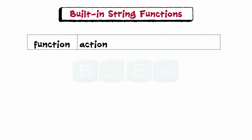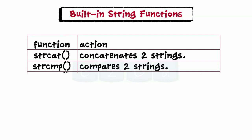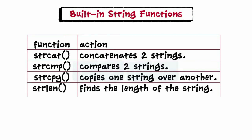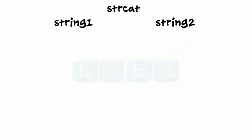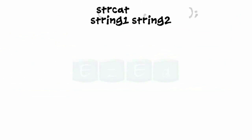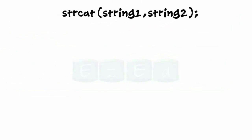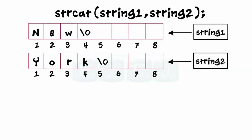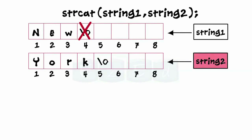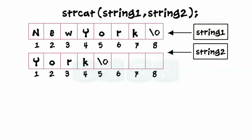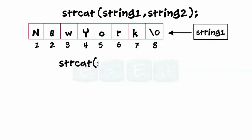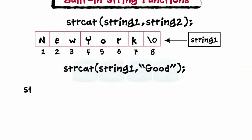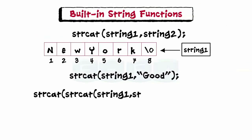Moving on to built-in functions — C supports a large number of string-handling functions. strcat is used to join two strings together. Here string1 and string2 are character arrays. When this function is executed, it removes the null character at the end of string1 and places string2 in its place — string2 is appended to string1. C also permits nesting of strcat functions.